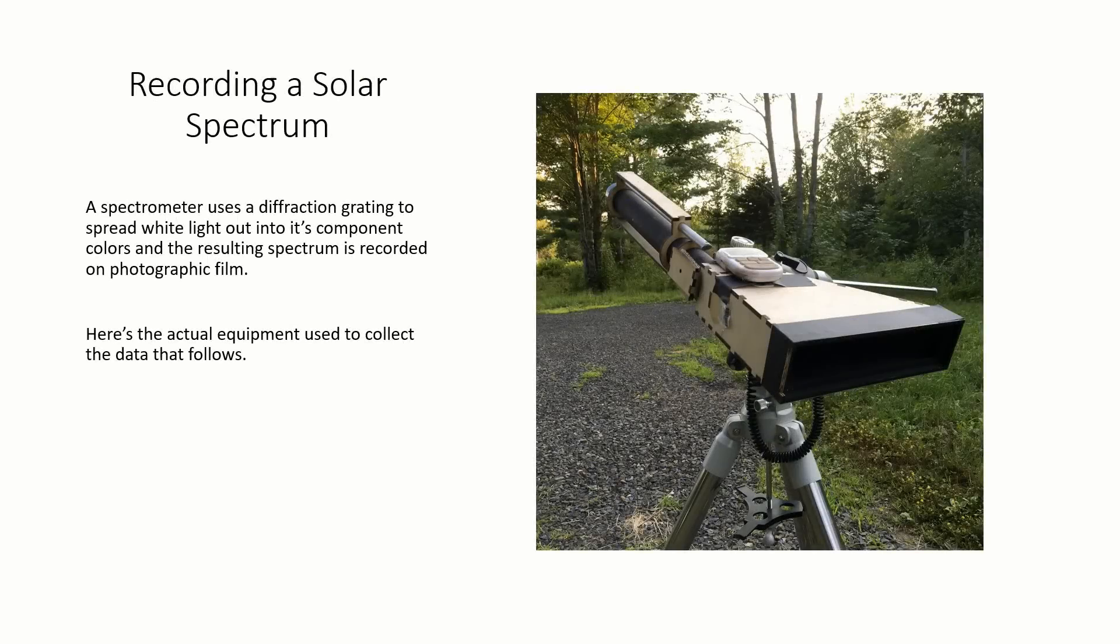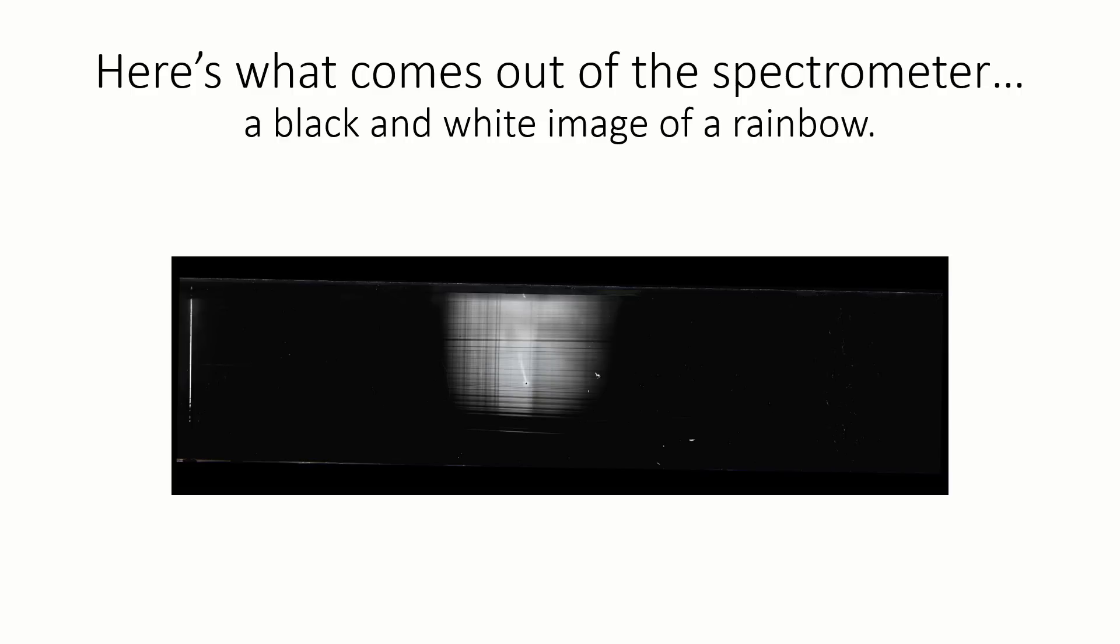The tool used to collect a spectrum is called a spectrometer. This projects the spectrum onto a glass plate coated with salted collodion. The result is a black-and-white image of a rainbow.